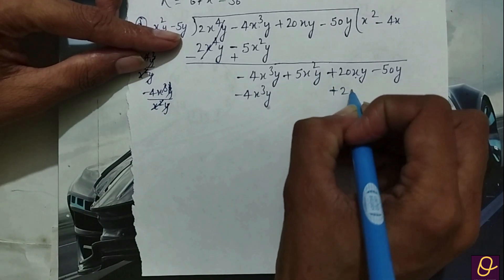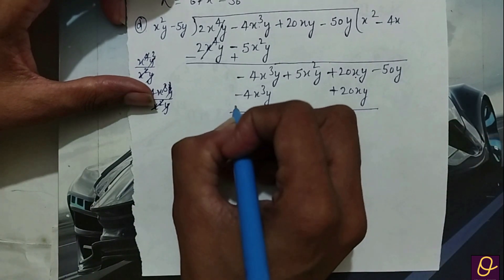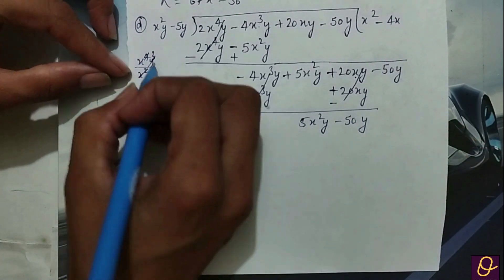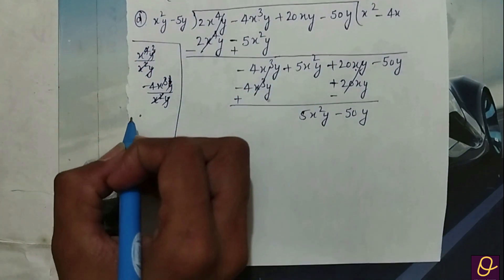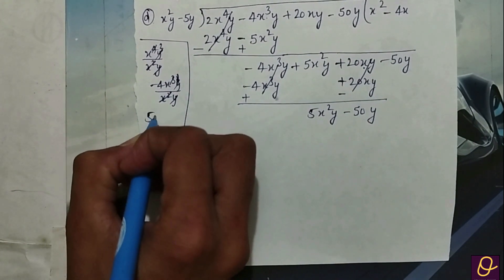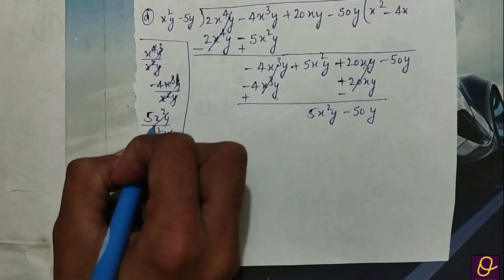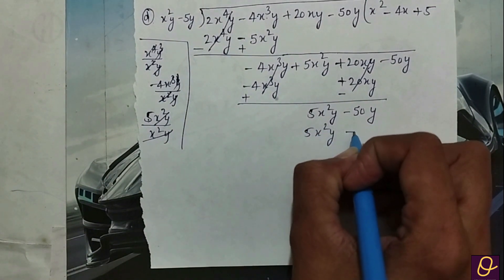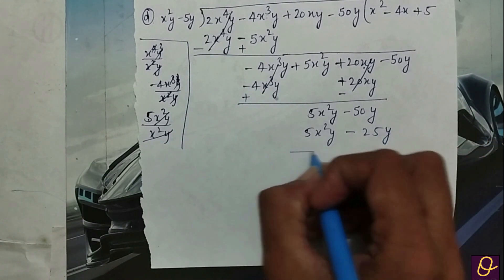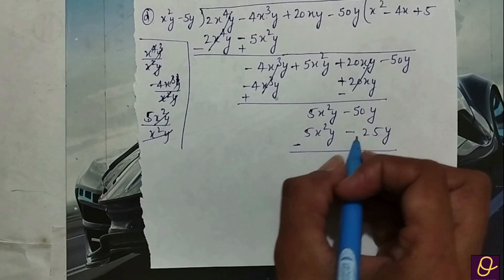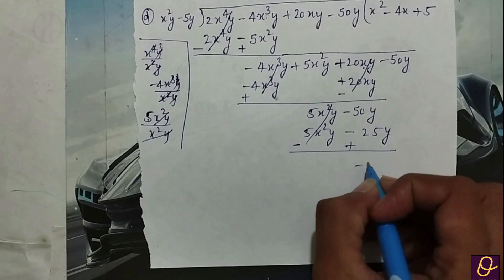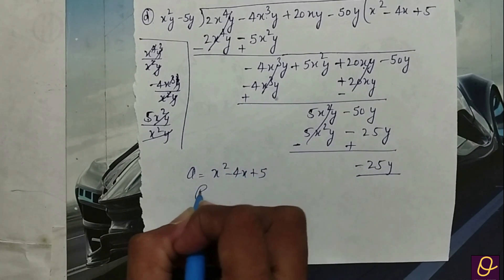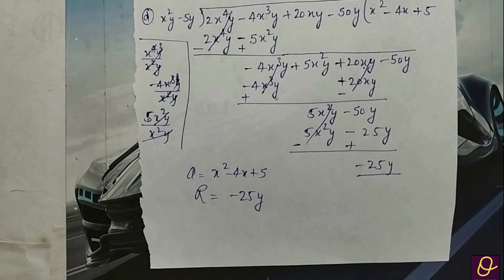Minus minus plus 5 positive 20x². If I change, we can fill out 5x²y and minus 50y. Divide by x²y. 5x²y divided by x²y, we can fill out here with a 5, plus 5. 5x²y minus 5x²y, 25y. We can fill out, what is it? Minus 25. So final check: x² minus 4x plus 5 and remainder is minus 25y. Okay, thank you so much for watching my video and have a great day.